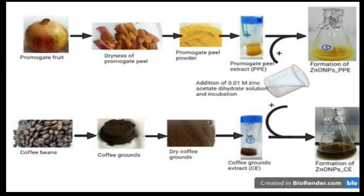Now we will do the synthesis from pomegranate fruit. We dry the pomegranate peel and convert it into powder, then extract it and add 0.01 molar zinc acetate dihydrate solution. After incubation, we get zinc oxide nanoparticles. The same process applies to coffee beans: we dry the coffee grounds, get the coffee grounds extract, add 0.01 molar zinc acetate dihydrate solution, and after incubation we obtain zinc oxide nanoparticles.